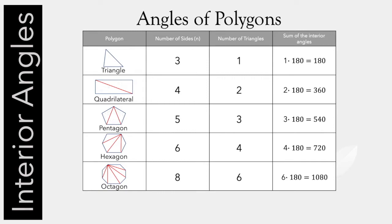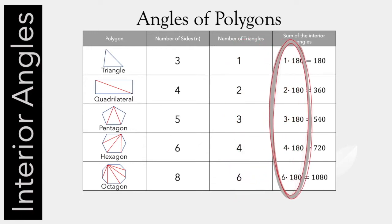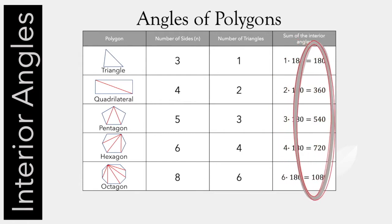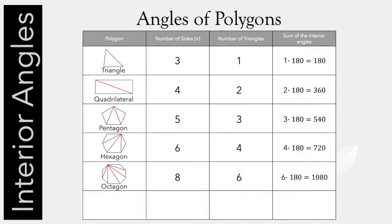So do we have any patterns here? From the number of sides of each polygon to the number of triangles, we've just subtracted two. So if we take the number of triangles in each polygon and multiply that times 180, we get the sum of the interior angles. We can generalize that: let's say the number of sides in any polygon is n. If I subtract two, I get n minus two. I multiply that times 180 to get the sum of the interior angles of any polygon.